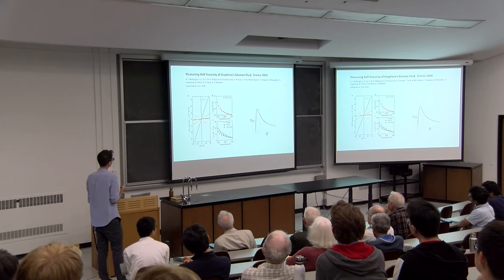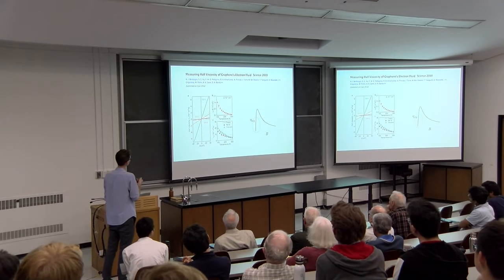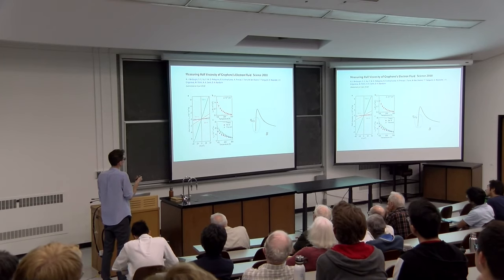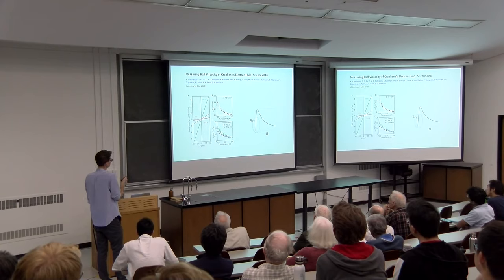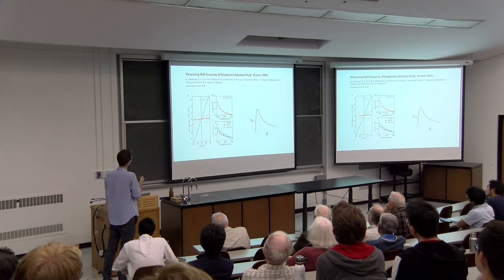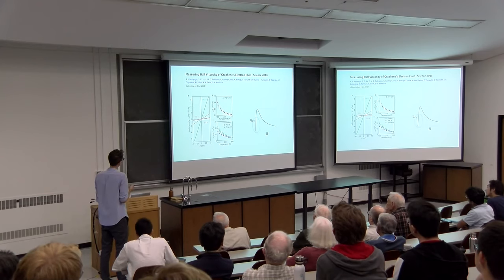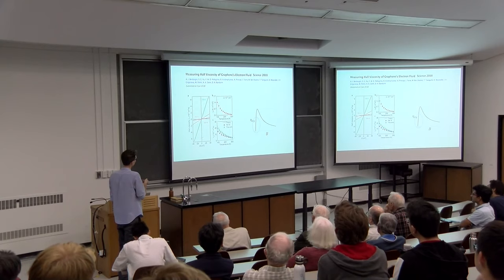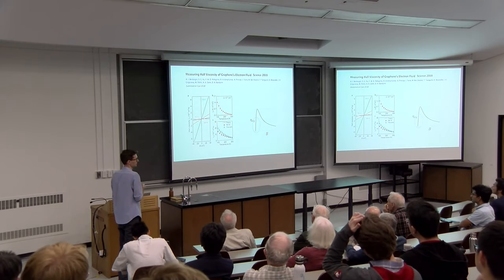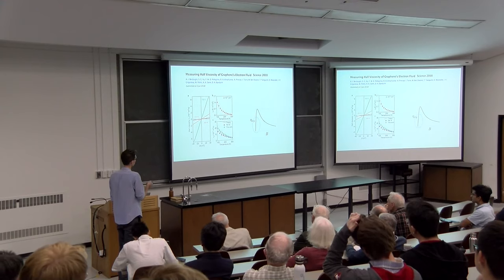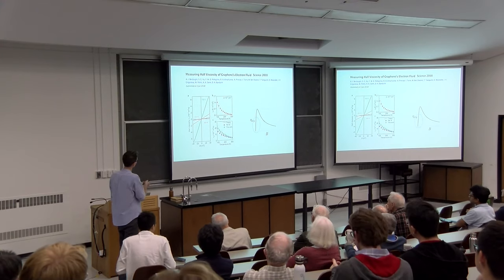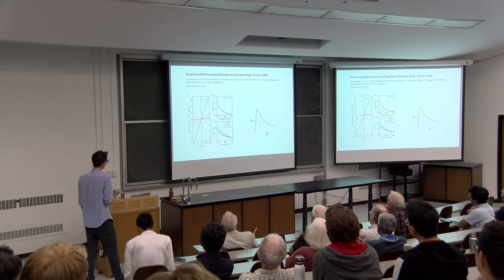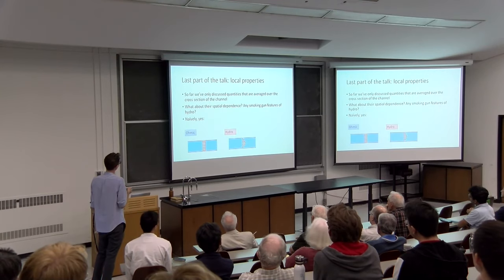Looking at the same equation but now measuring rho_xy, we find a correction to the bulk value of rho_xy that is proportional to the Hall viscosity and has this 1/W² size dependence. So the Hall viscosity can be measured by looking at finite-size effects in the Hall resistivity. Shortly after our paper was published, what I believe is the first measurement of the Hall viscosity in a solid-state system was performed in graphene by the group of Dennis Bandurin and Andre Geim. They show the Hall viscosity versus magnetic field, looking only at the linear regime, plotting Hall viscosity per Tesla as a function of temperature.